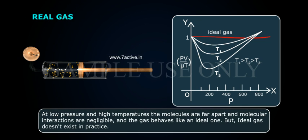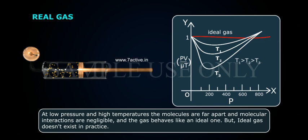At low pressure and high temperatures, the molecules are far apart and molecular interactions are negligible, so the gas behaves like an ideal one. But an ideal gas does not exist in practice.